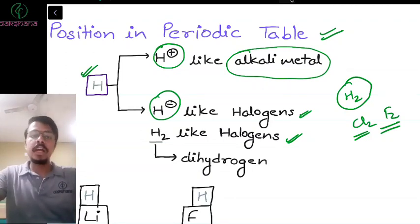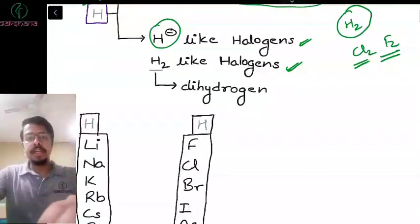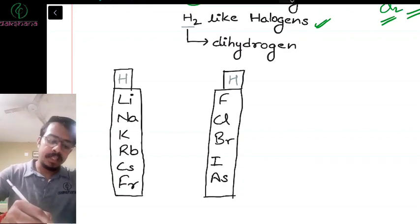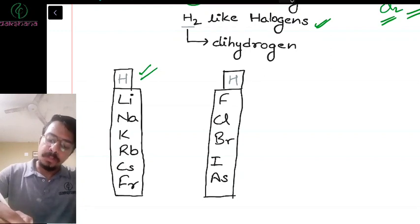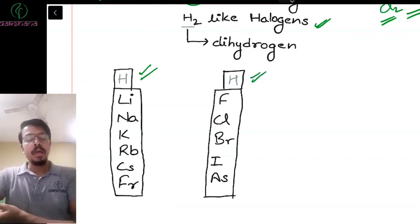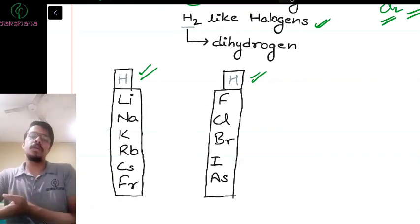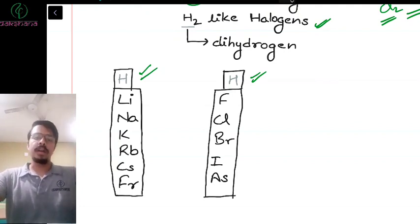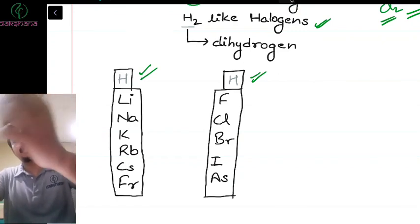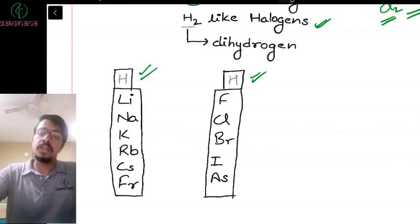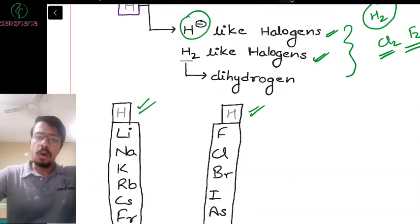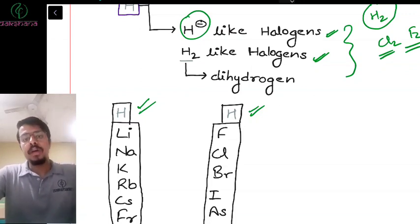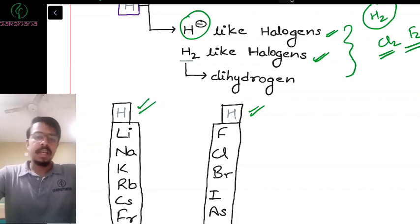There is always a debate about where hydrogen should be placed. In the modern periodic table, it is placed above group 1. But it can also be placed above group 17 because of its similarity with halogens. If you encounter a periodic table where hydrogen is above group 17, don't question it — both placements are valid. However, if asked in an exam, always answer group 1, since that is what the modern periodic table uses.